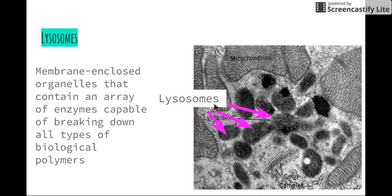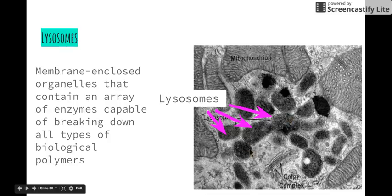Next we have the lysosomes. These are circular-shaped organelles that have a membrane around the outside, and they contain a number of enzymes that are able to break down a whole range of different biological polymers — meaning molecules made up of repeating chains created by living organisms. For example, amino acids are monomers that make up proteins, DNA is a polymer, and carbohydrates are polymers. The lysosomes break these down depending on the needs of the cell. We can see they are rather large, circular, and dark organelles, which are very different in size and shape to the mitochondria.